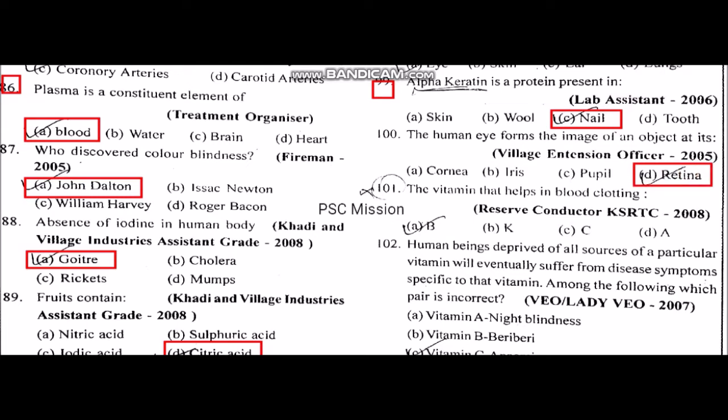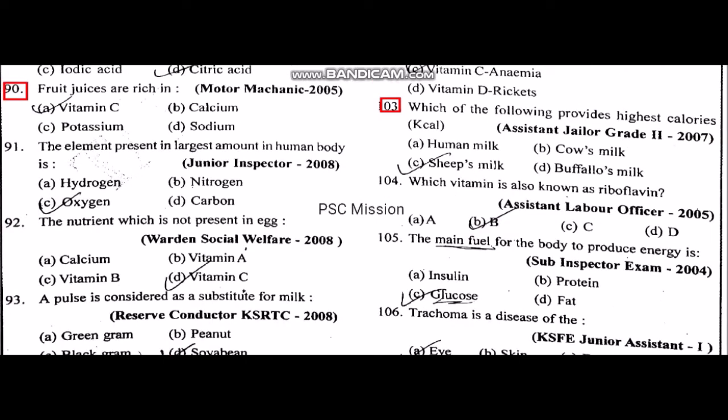The vitamin that helps in blood clotting is vitamin K. Fruit juices are rich in vitamin C.